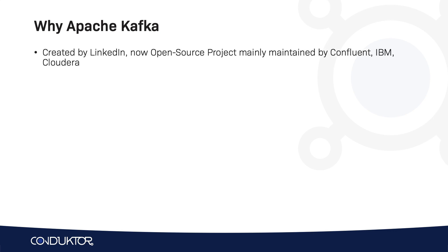So why Apache Kafka? This was a project that originated within LinkedIn. It was very successful and it was open sourced. This open source project then found its home under the Apache Software Foundation, ASF, which is why it's called Apache Kafka. It is an open source project, but there are some private corporations maintaining it. Some of them include Confluent, IBM, and Cloudera, among many others. The main organization supporting the Kafka project is Confluent, which has a whole business model around Apache Kafka bringing their own enterprise software on top of the project.